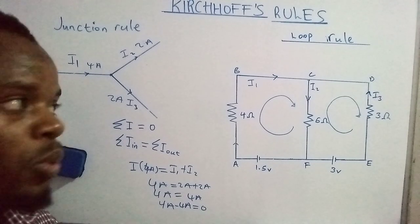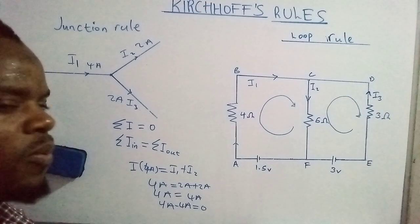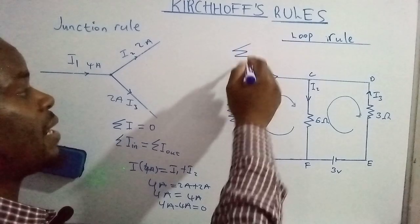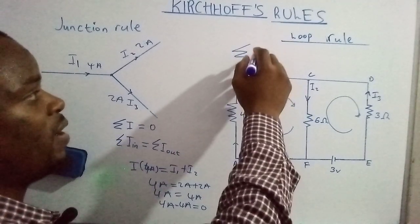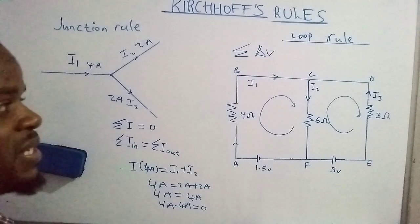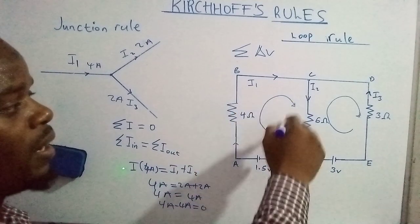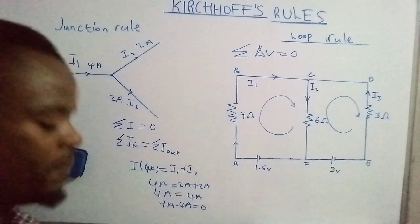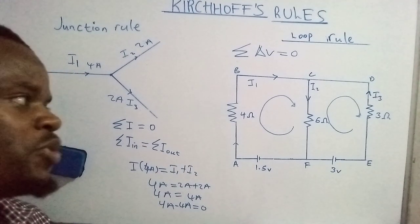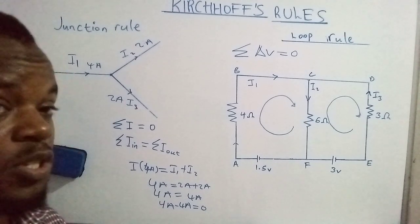Now let's move on to the second rule, which we call the loop rule. It states that the algebraic sum of the potential differences across the components within a closed loop is equal to zero. For this to hold true, there are certain steps you have to follow to make this rule work.